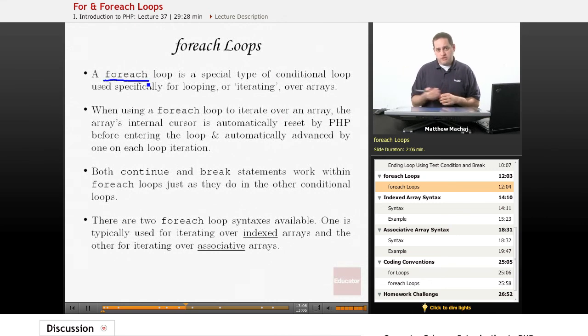It calls the each function essentially on that array, which is going to pull out the key and value for you if you need those. And then as the each function works, it actually increments the array cursor by one. It's going to go ahead and execute the statements in the foreach loop.